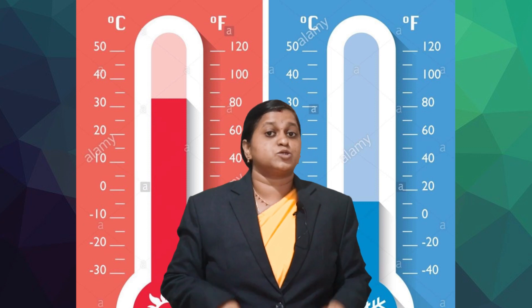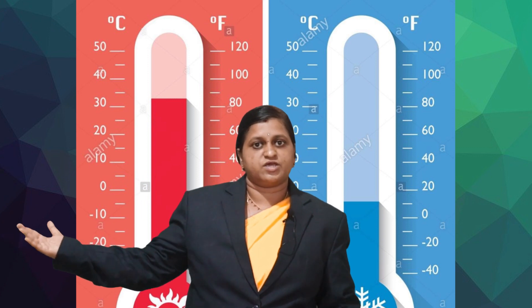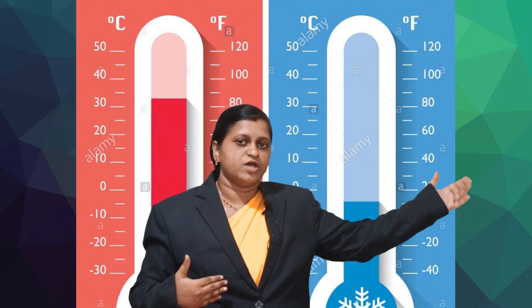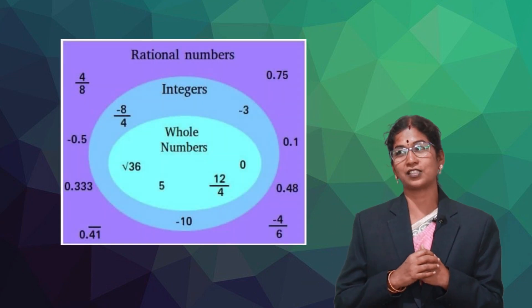Another example is usage of thermometer. If the temperature is above zero, denoted by the positive integer. If the temperature is below zero, is denoted by the negative integer.